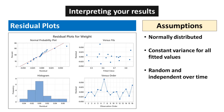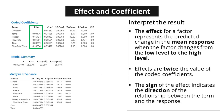The assumptions of the residual plot are fundamental in regression analysis. The first assumption is that the residuals should be normally distributed. Another assumption is that the residuals should exhibit constant variance, also known as homoscedasticity. Additionally, there should be no pattern in the residuals. The effect for a factor represents the predicted change in the mean response when the factor changes from the low level to the high level. Effects are twice the value of the coded coefficients, and the sign of the effect indicates the direction of the relationship between the term and the response.